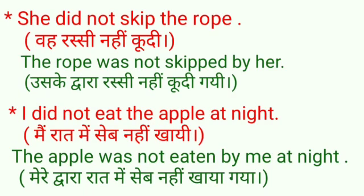Now see some sentences with negation. We'll deal with negative sentences. 'She did not skip the rope' — वह रस्सी नहीं कूदी। Subject की जगह object, object की जगह subject। 'The rope' is singular, so 'was not'. Third form of 'skip' is 'skipped', followed by 'by her'. 'She' in object form becomes 'her'. Meaning: उसके द्वारा रस्सी नहीं कूदी गई।